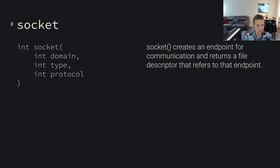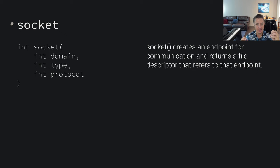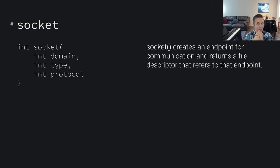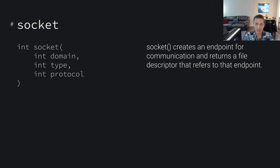A socket is a type of file. As we'll learn through Linux material, a lot of concepts are represented as files, and the networking file concept is a socket. When you perform a socket system call, it creates an endpoint for communication and returns a file descriptor that refers to that endpoint. A socket is really just a file that has an A point and a B point linked up. When traveling across the internet, we need an endpoint for communication — we need a socket. The socket system call creates this file-like thing that will allow us to start doing networking-related communication.